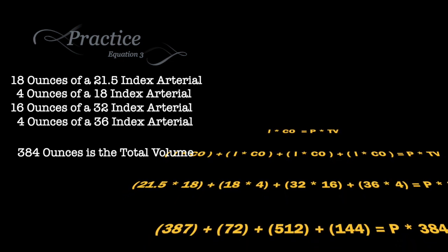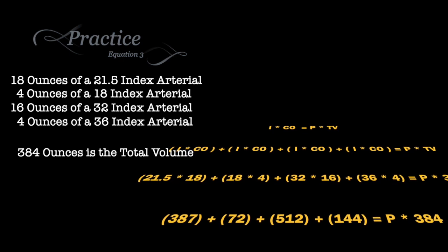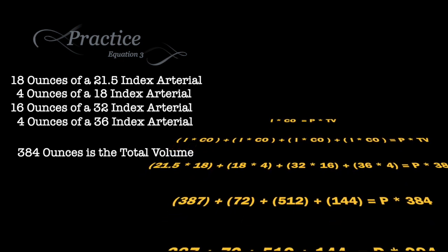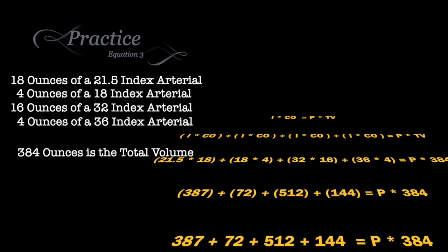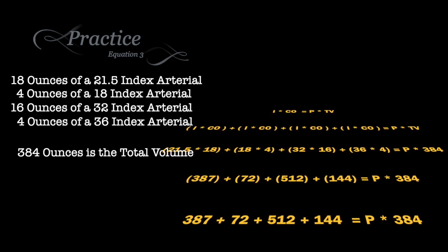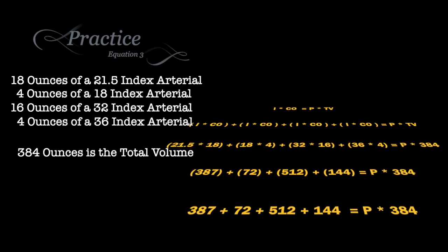By plugging it in, we have 21.5 times 18 for the first chemical, 18 index by 4 ounces for the second, 32 index by 16 ounces for the third, and 36 index by 4 ounces for the fourth.